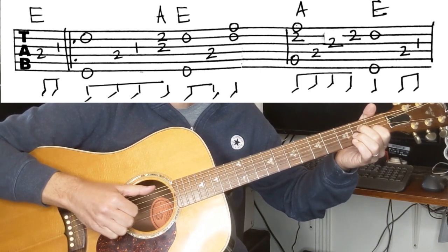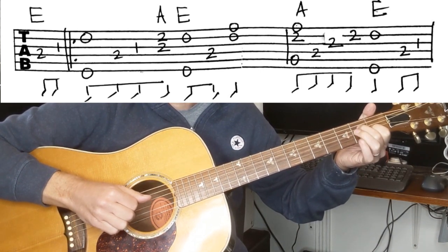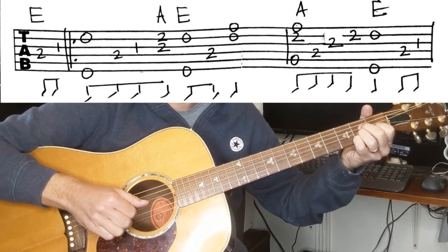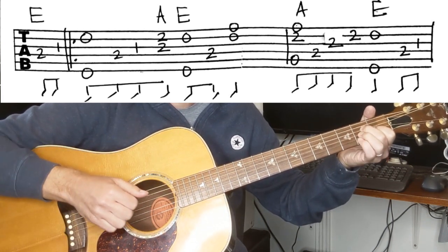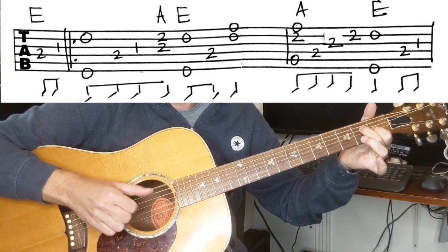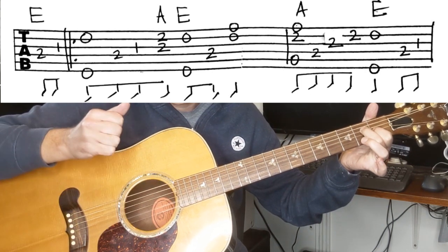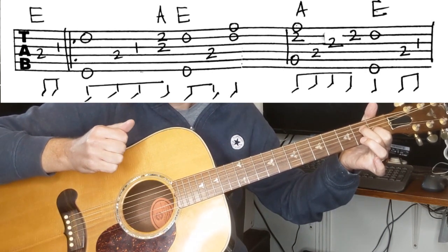Now our third and fourth fingers are going to come down into an A, then we go back, lift them up and you've got an E underneath.